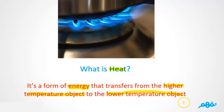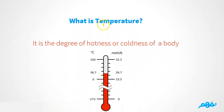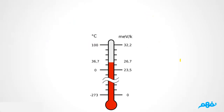Now let's look here — we have a thermometer. What is temperature? Temperature is a degree of hotness or coldness. When we talk about high temperature, we're talking about hotness; when we talk about low temperature, we're talking about coldness. So temperature is the degree of hotness or coldness of a body.